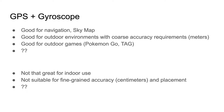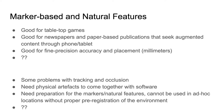GPS and gyroscope are generally suited for outdoor setups; they're not great for indoor use and may not be suitable at all indoors. They're also not suitable for very fine-grained accuracy — if you need very precise placement of artificial content, GPS and gyroscope might not be appropriate. There are other disadvantages left as homework for the students to consider.